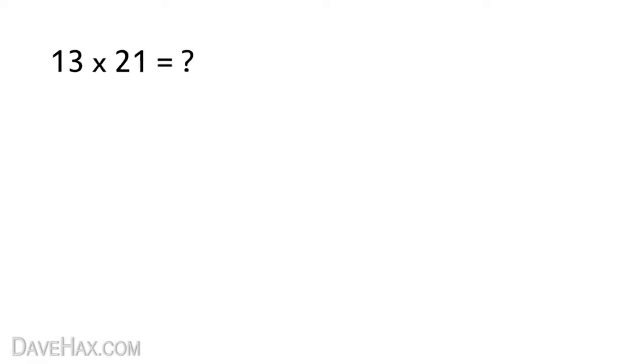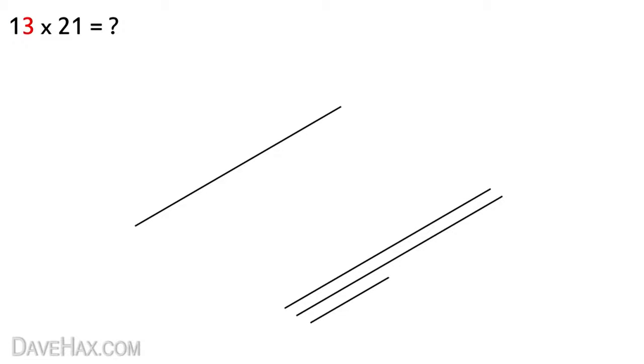As we can see the first digit in this equation is 1 which means we draw one straight line diagonally like this. The next digit is 3 so we leave a little space then draw three lines parallel to the first one like this.